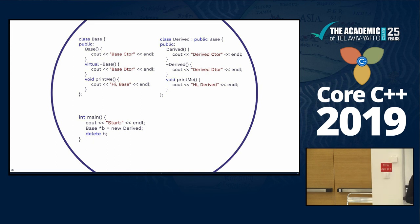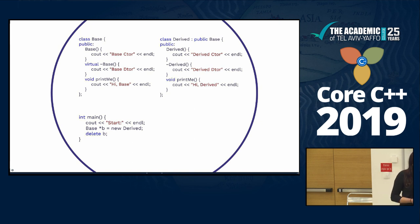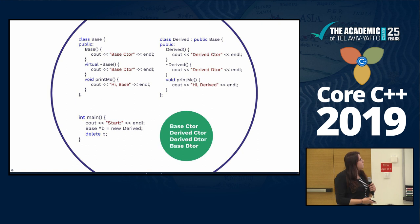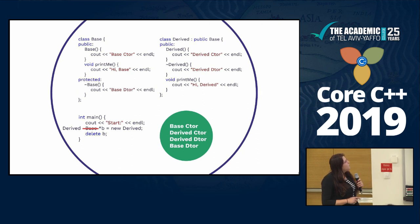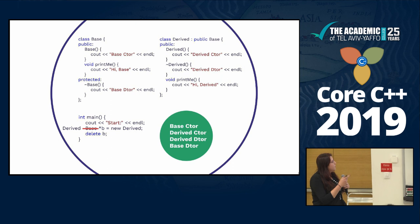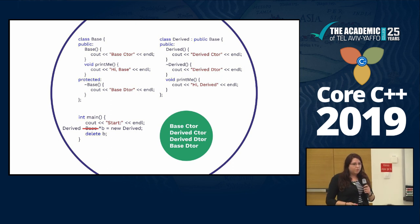Dynamic dispatch means the compiler looks at the type of the object at runtime, and static dispatch means it refers to the type of the object at compile time. With the fix, we now have the derived destructor called. Another way to solve this is by putting the base destructor under protected — in that case we won't be able to create a base pointer, only a derived pointer, and we also avoid the problem.